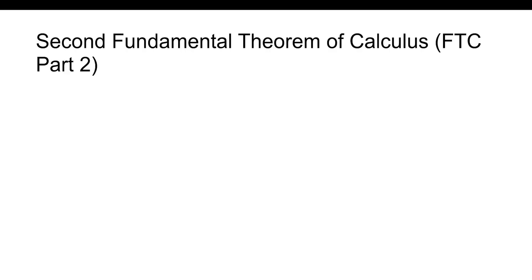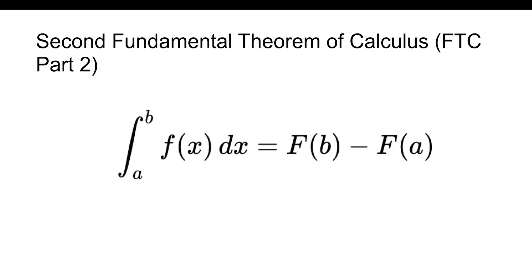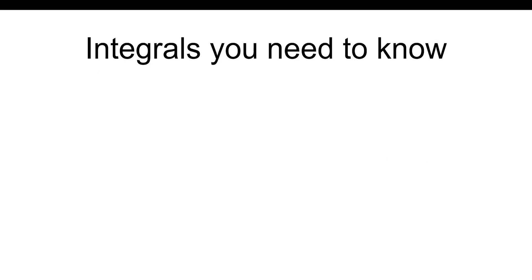The Second Fundamental Theorem of Calculus (FTC Part 2) is how you evaluate a definite integral: the integral from a to b of f(x) dx equals F(b) − F(a), where F is the antiderivative of f. This one is straightforward.